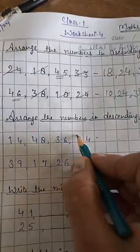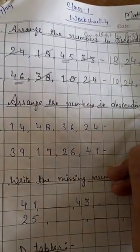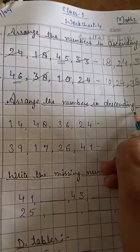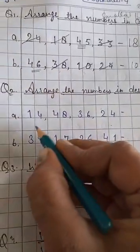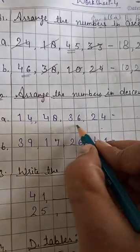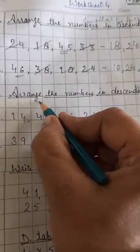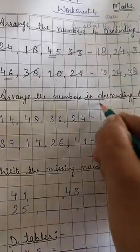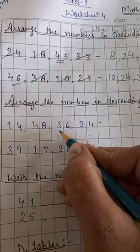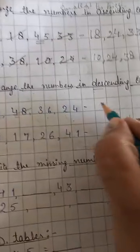Okay students. Now, arrange the numbers in descending order. Descending order you know. What is the descending order? Yes, biggest to smallest. Then, these numbers are 14, 48, 36 and 24. So, have to arrange the numbers in descending order. Firstly, we will choose the greatest number. Yes. What is the greatest number? 48.